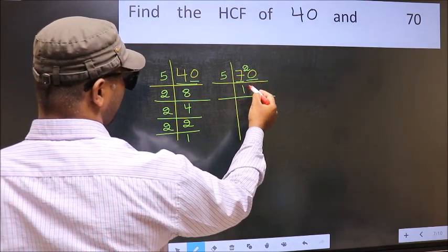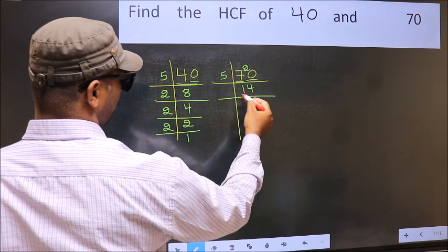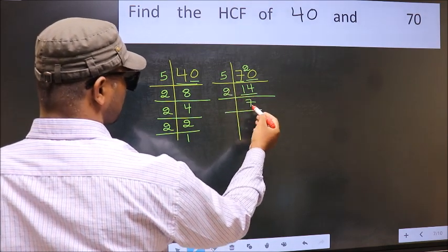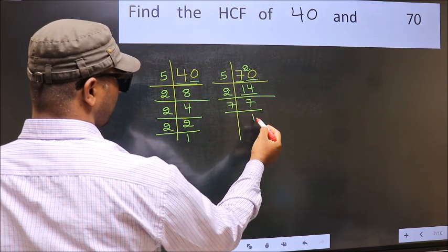When do we get 20 in 5 table? 5×4 is 20. Now 14 is 2×7 is 14. 7 is a prime number, so 7×1 is 7.